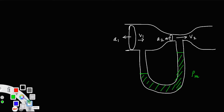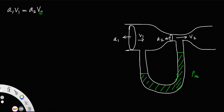By applying the equation of continuity, we have A1·V1 = A2·V2, since cross-sectional area times velocity is a constant. Therefore, A1/A2 = V2/V1. Let us call this equation number 1.